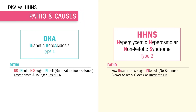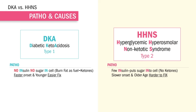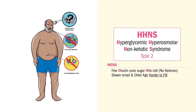Typically, DKA has a faster onset and consequently it's easier to fix, since the patients are young with type 1 diabetes. HHNS is a slower onset with older patients, so it's harder to fix HHNS.